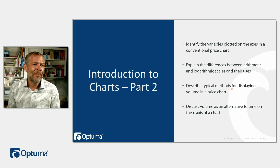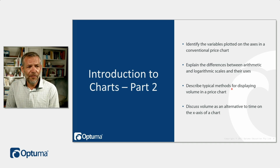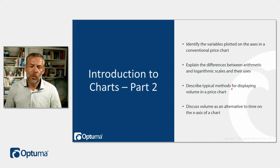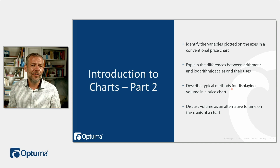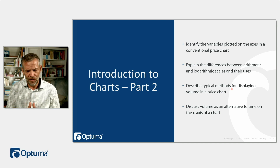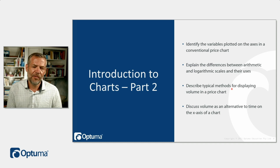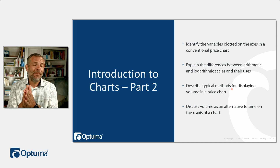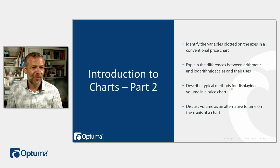That's a quick chapter. The variables plotted on the axes include arithmetic scales and logarithmic scales. We need to understand the concept of multiple scales on a chart, the time scale along the bottom, and how equivolume makes the time scale non-linear. Volume is shown directly underneath each bar as a histogram. That is our introduction to charts — thank you.